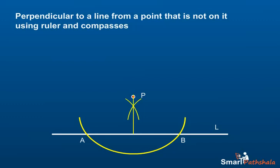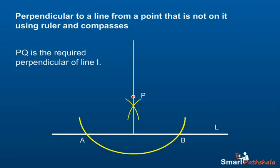Step 6: Join PQ. PQ is the required perpendicular of line L.